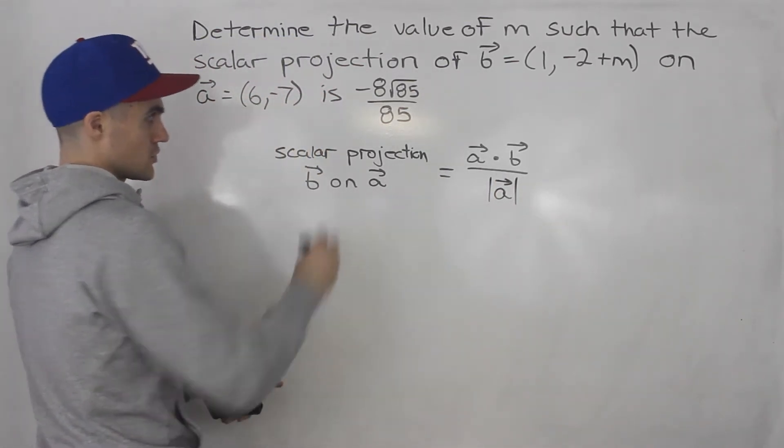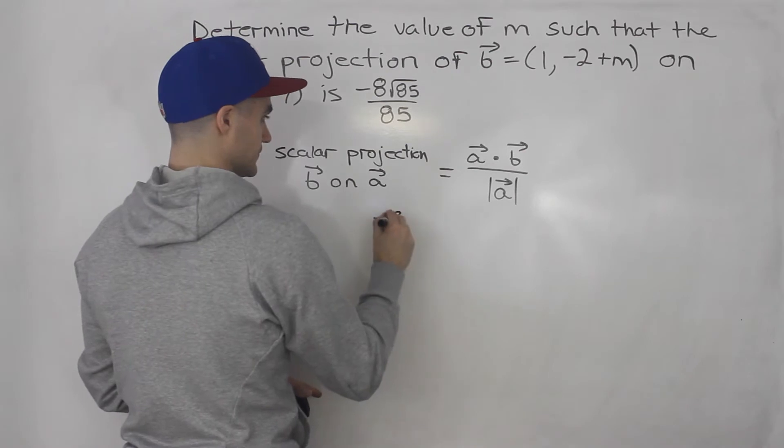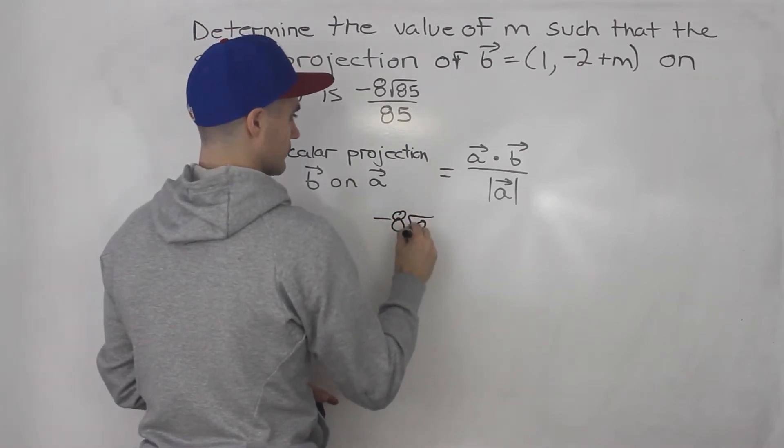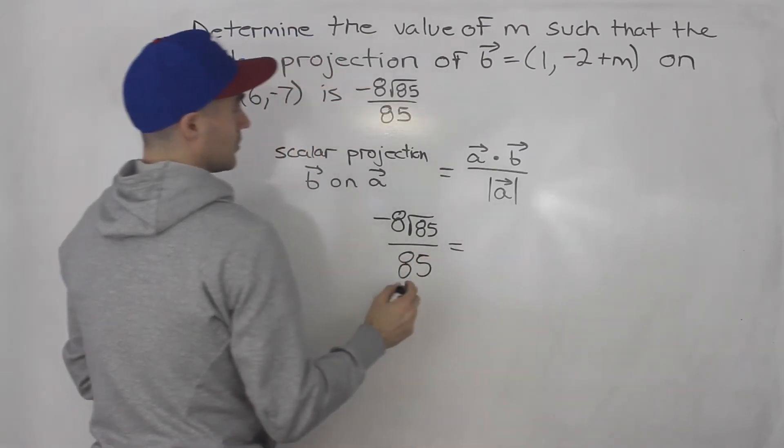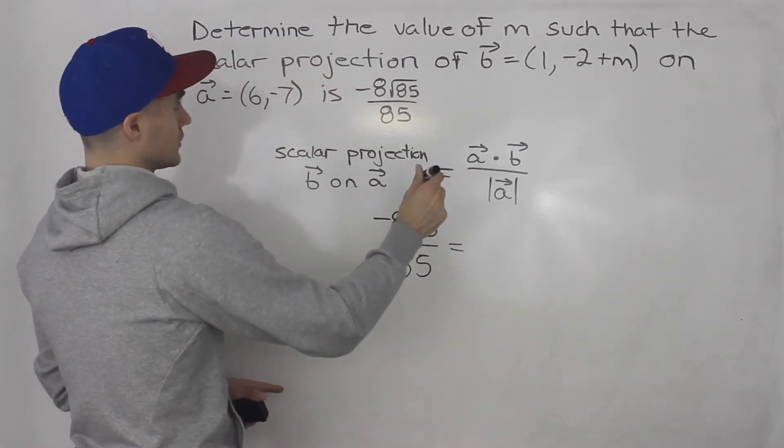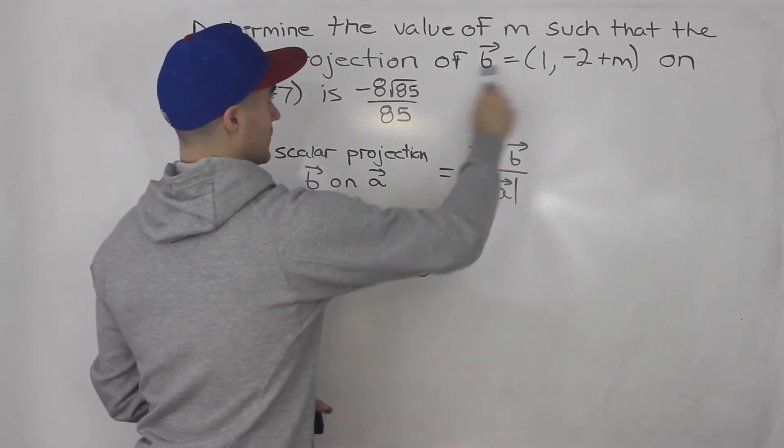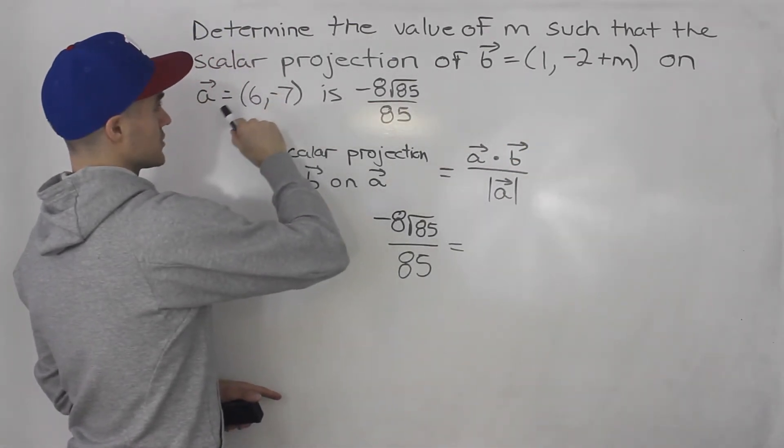Well, the scalar projection we're told is this here. What about the dot product? We're not told what it is, but we could find it. We can multiply the components by each other and sum them up. So 6 times 1 is 6.